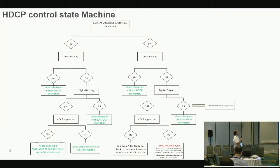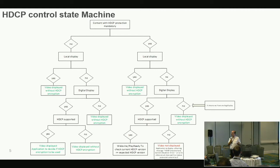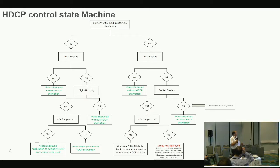A quick review of the HDCP control state machine: HDCP considers a local display — meaning a display embedded in the device such as a smartphone or tablet — as not needing to be secure, so you are allowed to send clear content even in 4K. Even with a local display, if you output through an analog output, you don't need to encrypt, since HDCP is only supported on digital output. To have HDCP enabled, you need a non-local display on a digital output.